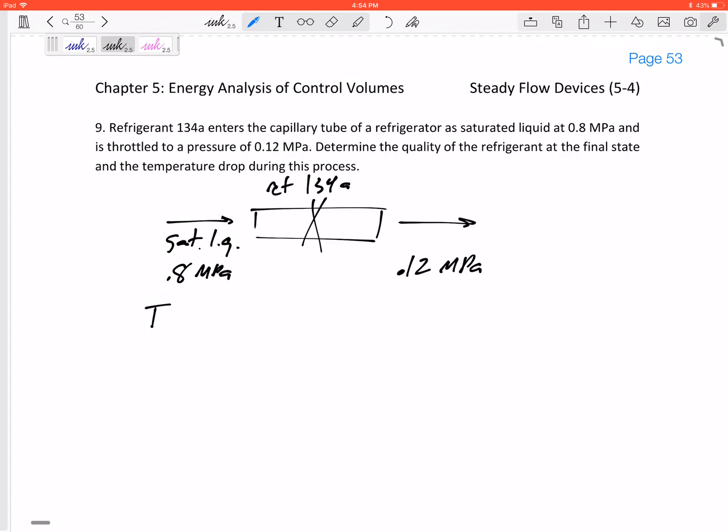What properties might we want to find? Well, it asks for the temperature drop, so we might want to find the temperature. For a saturated liquid, it's all at T_sat. I am in Table A-12, the pressure table for refrigerant. The temperature associated with that pressure is 31.31 degrees C.